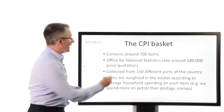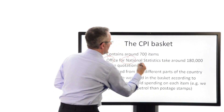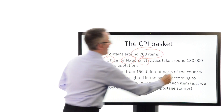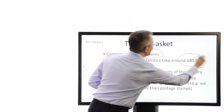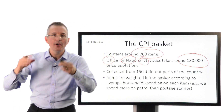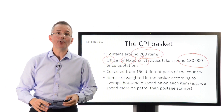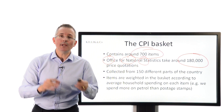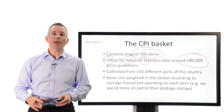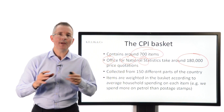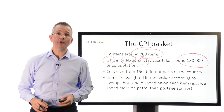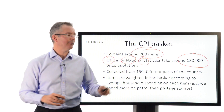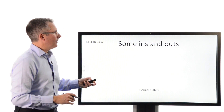The Office for National Statistics, which is part of the government, looks at 700 items, taking around 180,000 different price quotations from all around the country, and then weights each item in the basket according to its relative importance in expenditure terms — so a pretty hefty exercise.